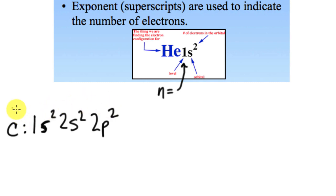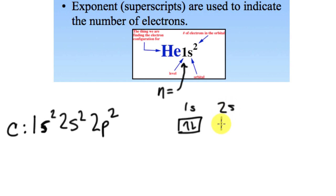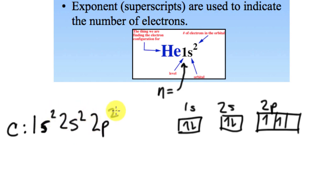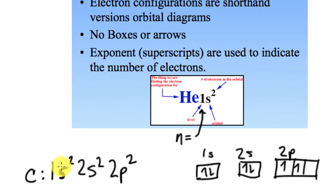That gives me 2, 4, 6 electrons for carbon. Normally with orbital diagrams, we would have drawn 1s with two electrons, 2s with two electrons, and then 2p with one electron in each of two boxes. But that takes a lot of time. We just take those electrons and put them in as numbers. They're not really exponents — it's not 1s squared — they're just the number of electrons in that orbital.